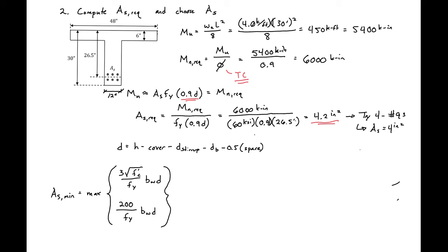Since we are using number 9 bars but initially calculated d using number 8 bars, we need to recalculate d. So d equals our overall height of 30 inches, minus cover of 1.5 inches, minus stirrup diameter of 0.5 inches, minus the diameter of our number 9 bars of 1.128 inches, minus half the spacing between layers of 1.128 inches. Our new d is equal to 26.3 inches.